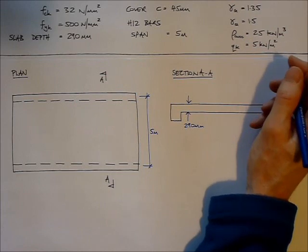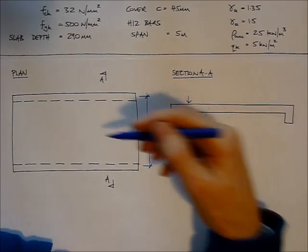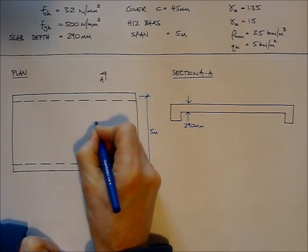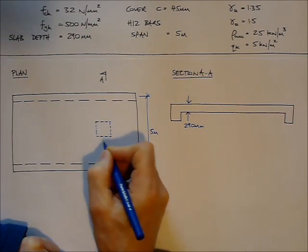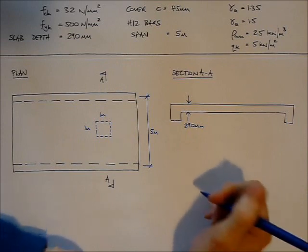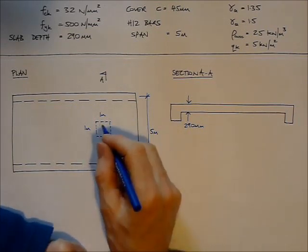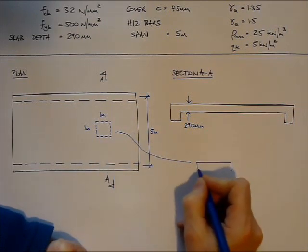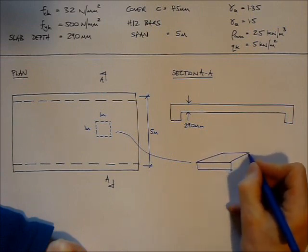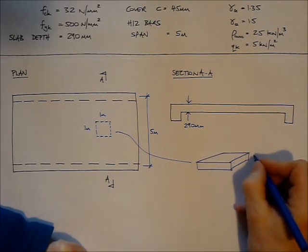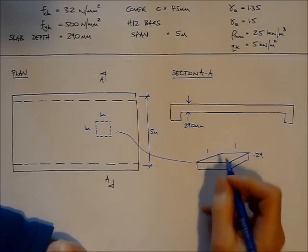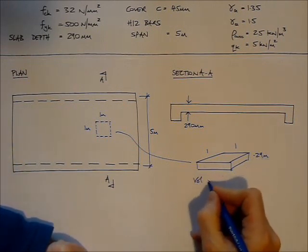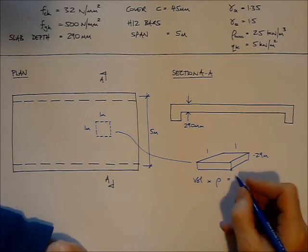What I'd like to do first is tally up all the loads acting on the slab that I'm going to design, so I'd like to work out what the load is on one square meter of that slab. I'm going to work out what the dead load is, the self-weight of that slab. The self-weight of that lump of reinforced concrete is simply its volume: 0.29 meters deep times one meter times one meter, times the density.